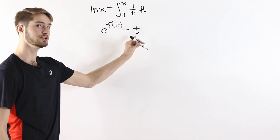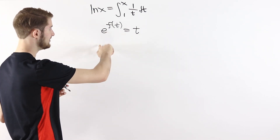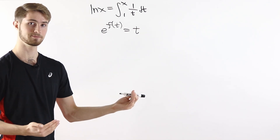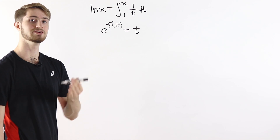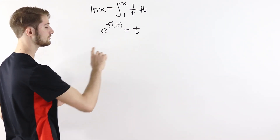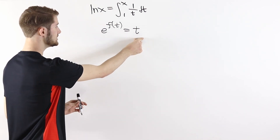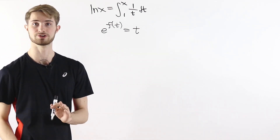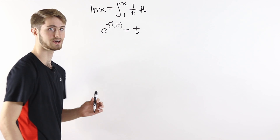That has to give us the original number back. So if we apply f first and then e to the x, those two cancel each other out in that order. This equation tells us that f is an inverse to e to the x, and it has to hold for all numbers t. If two functions are equal for every single real number, then their derivatives also have to be equal, so we can take the derivative on both sides.